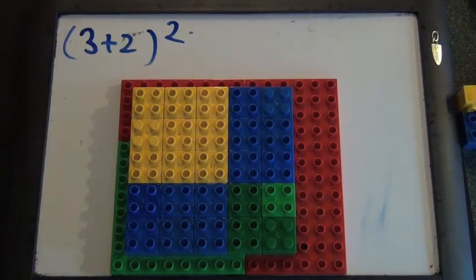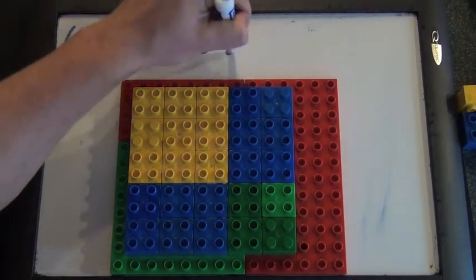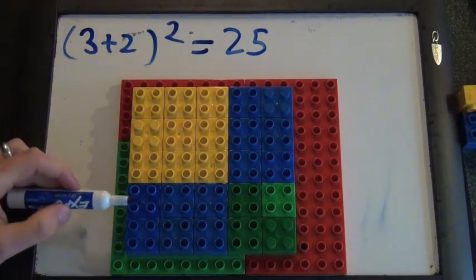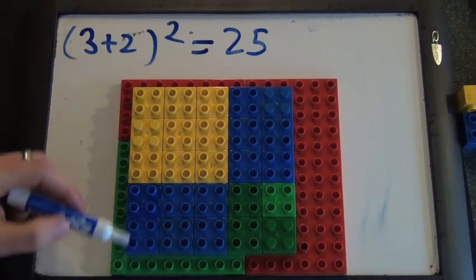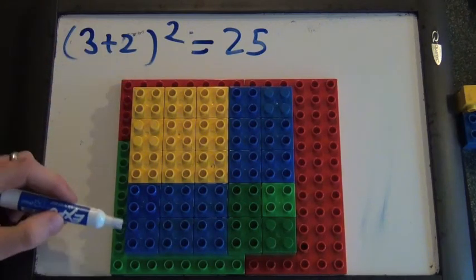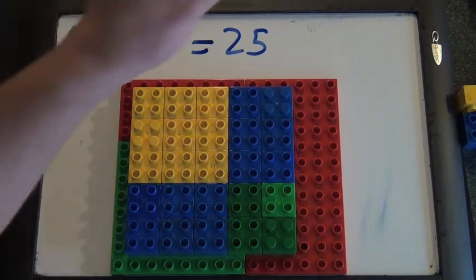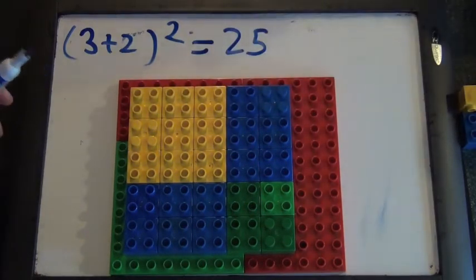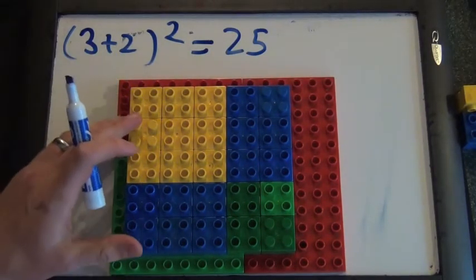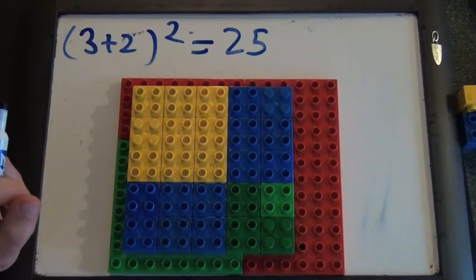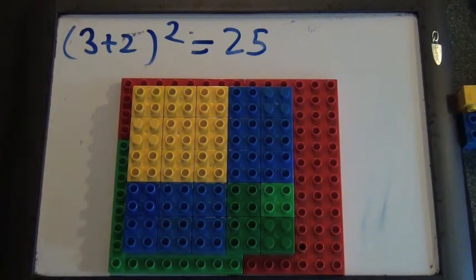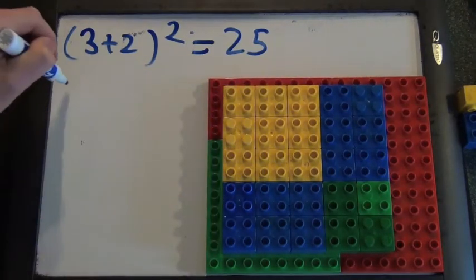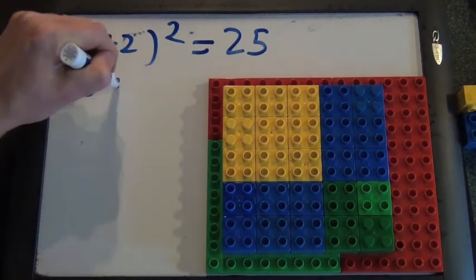We should have 25 blocks in it — should we count and see? One, two, three, four, five — there's five in each row. And how many rows are there? One, two, three, four, five. So that's five times five. Five rows of five is 25 blocks. So we did get that it was 25. And we found that this is not equal to three squared plus two squared.